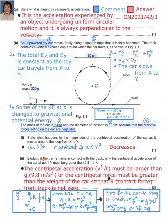For part two, explain why — if the car remains in contact with the track — the centripetal acceleration at point Y must be greater than 9.8 m/s². Note that 9.8 m/s² is the acceleration due to gravity. To answer this, we draw a free body diagram for the car at Y. W is the weight of the car, R is the contact force exerted by the track on the car, A is the centripetal acceleration, and C is the center of the vertical loop. Both forces W and R act towards the center C.